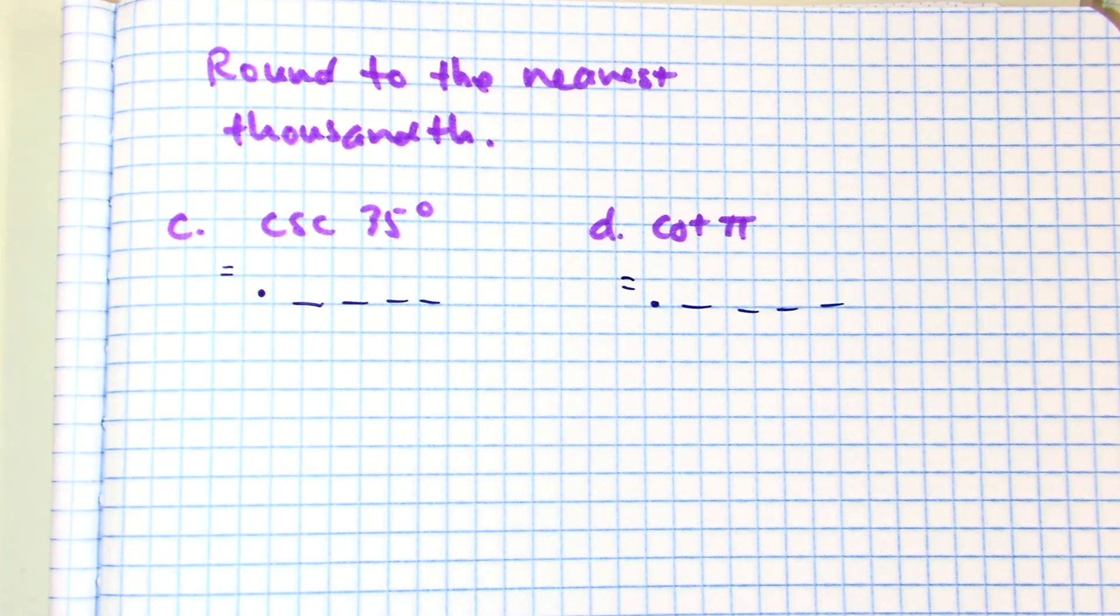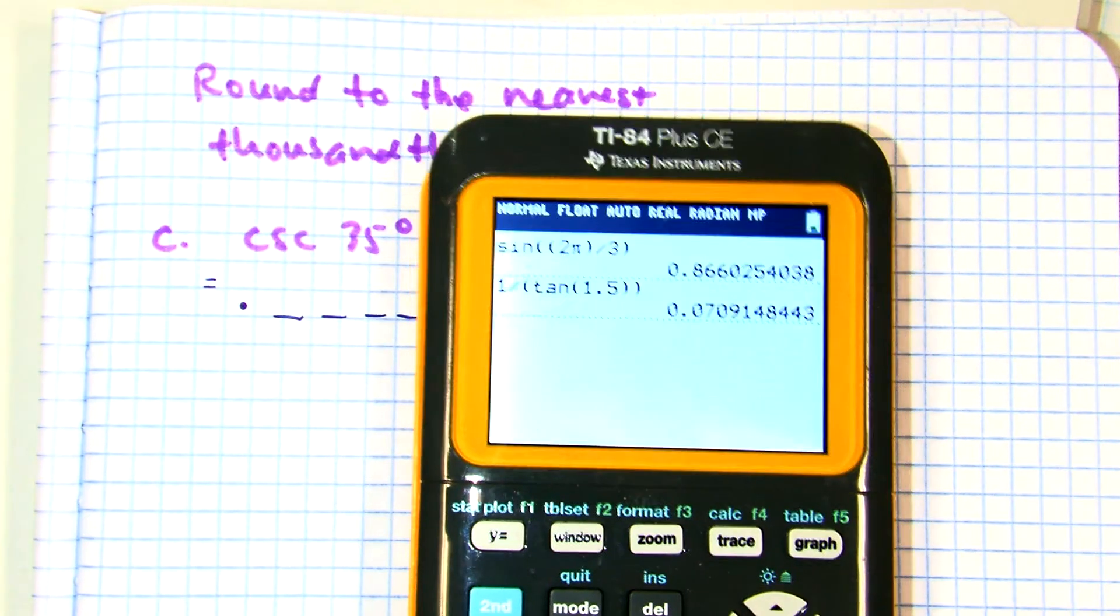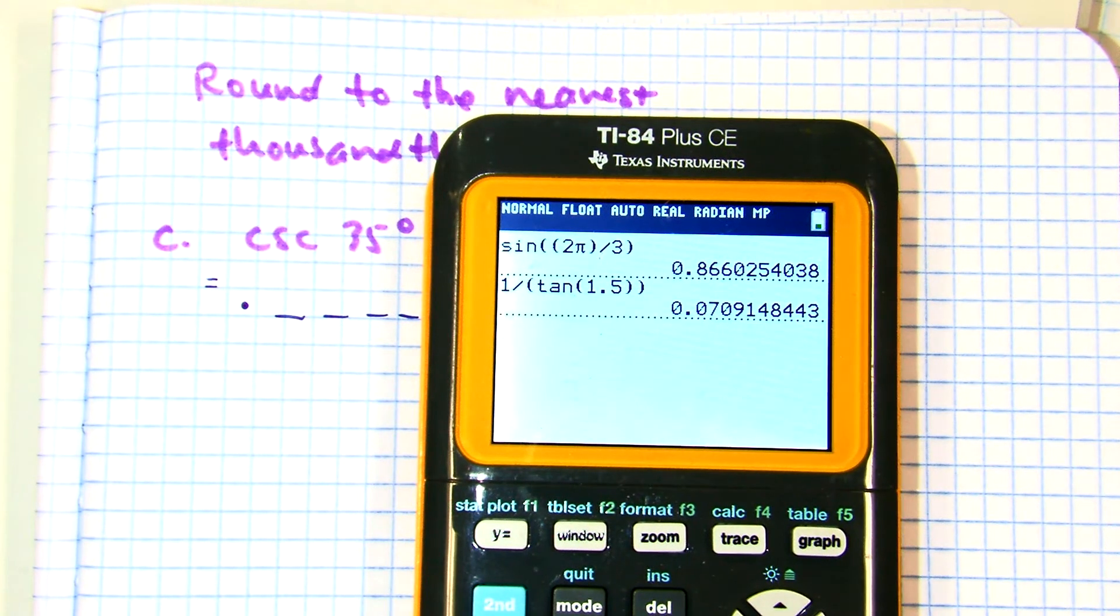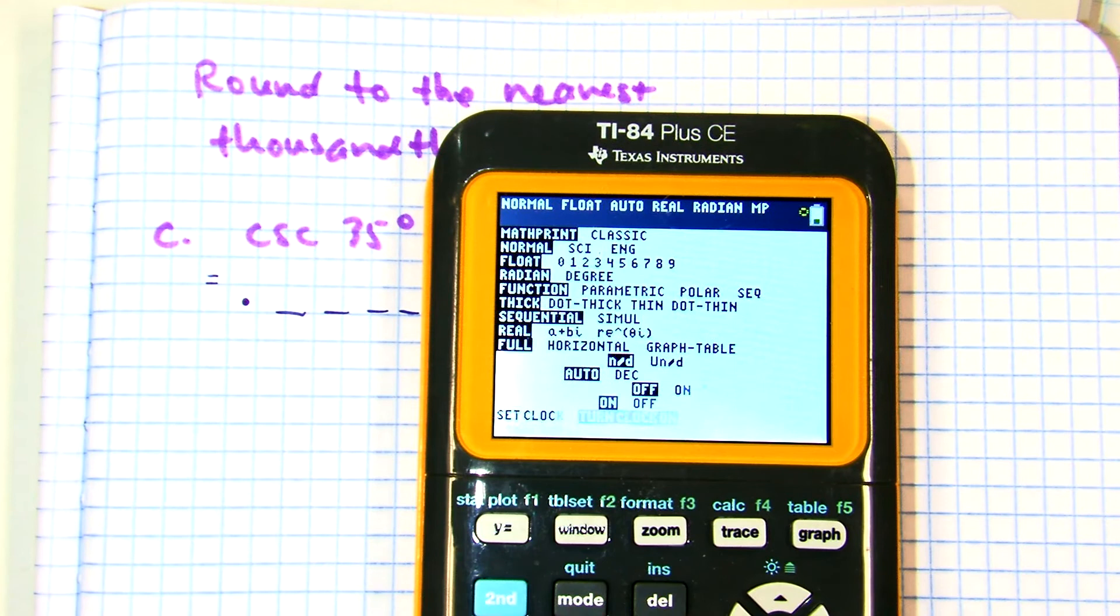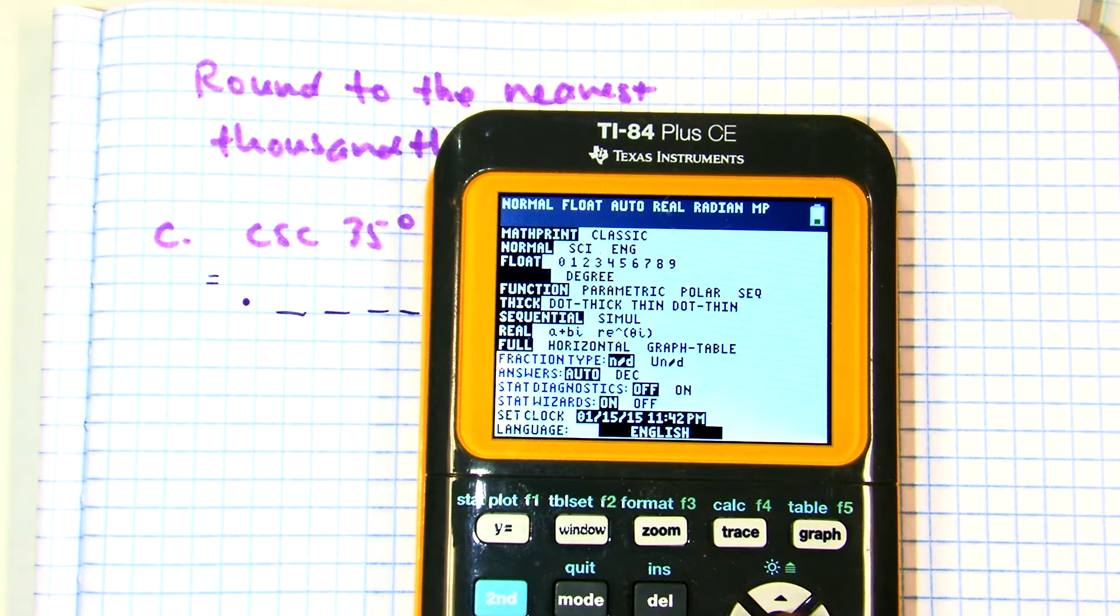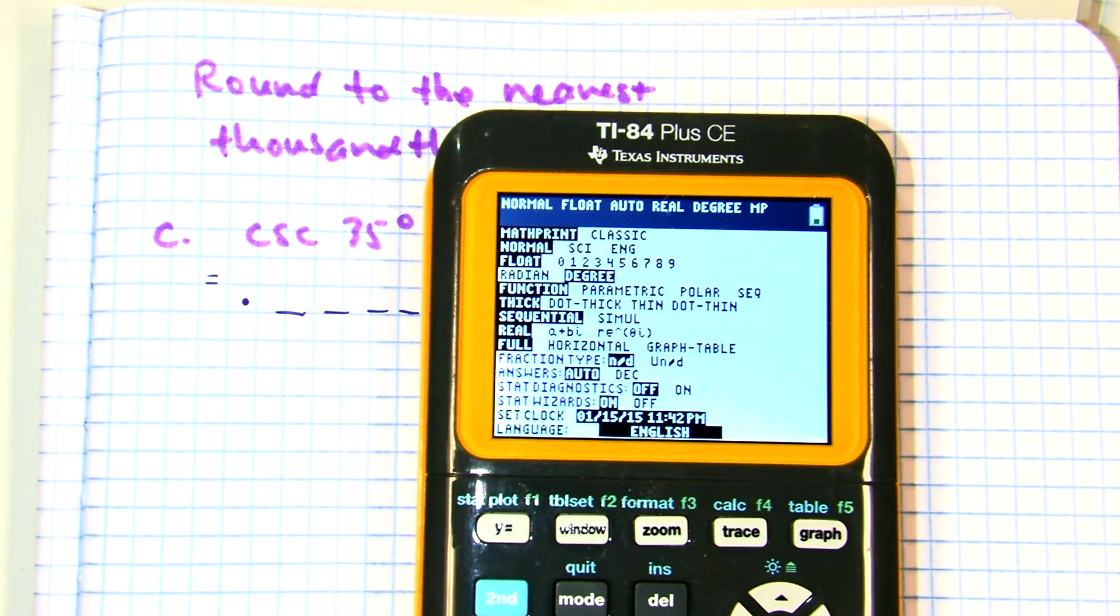Is that degrees or radians? Degrees. Is my calculator on degrees or radians? Yep, so I gotta switch it. Mode. Go down to degree. Press enter. To get out, you can press second mode.